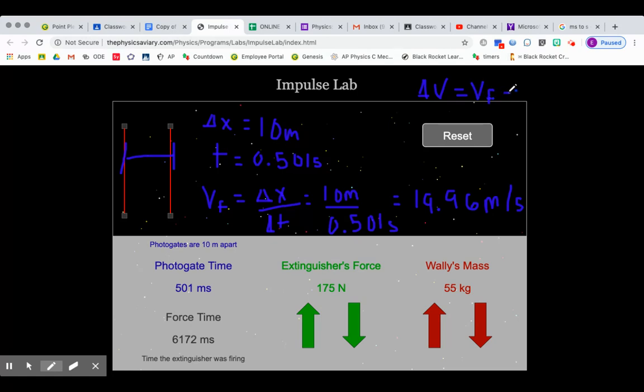So to find delta V, we take that final velocity, we subtract 0. So delta V is going to be 19.96 meters per second.